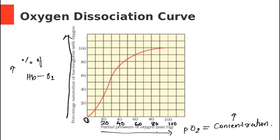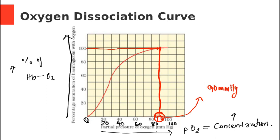Let's look at the data this graph is giving us. I am going to select two points on the x-axis. The first is 90 — at PO2 of 90, the percentage saturation is almost 100%. This 90 mmHg is the PO2 of arterial blood.